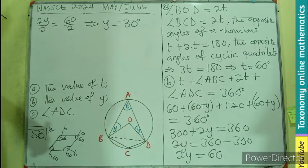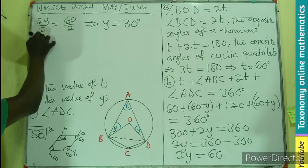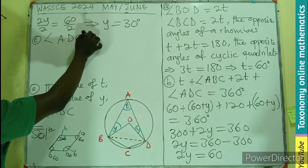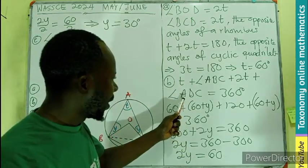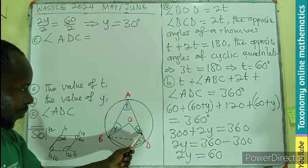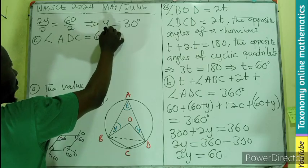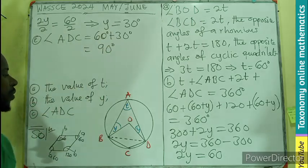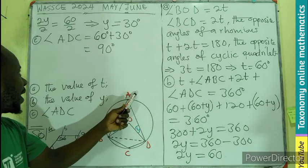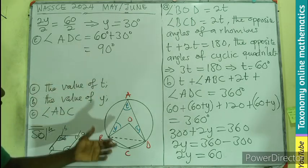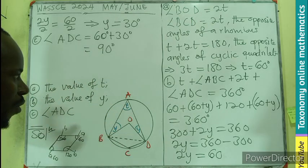Now let's find angle ADC. We used 60° + y to represent it earlier. So angle ADC = 60 + y = 60 + 30 = 90°. Therefore, the value of angle ADC is 90°.